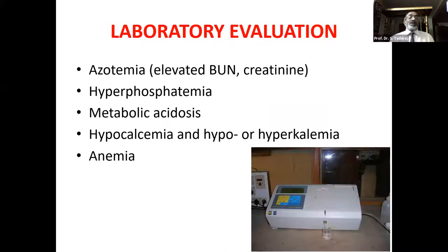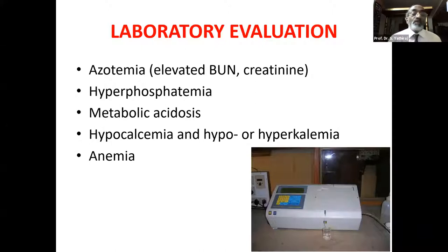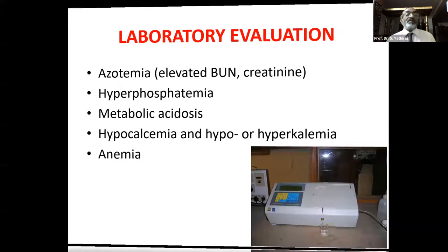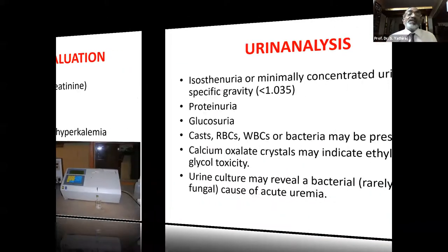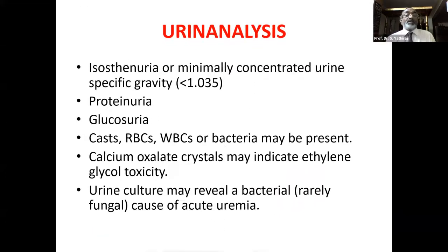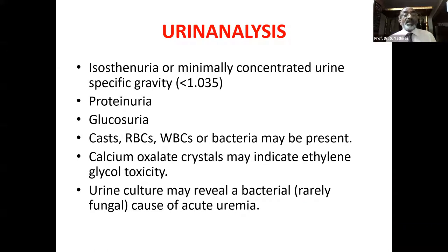In blood: look for BUN, creatinine, phosphorus, calcium, sodium, and potassium. In hematology: RBC, hemoglobin, and PCV — these are most important for monitoring. Urinalysis is often neglected by many practitioners, but at minimum you should use a total solids meter to check specific gravity, check for albumin/protein, examine urine sediment by centrifuging 15 mL of urine and looking under the microscope for casts, RBCs, WBCs, bacteria, and crystals. A urine culture may also be needed.